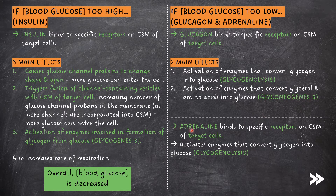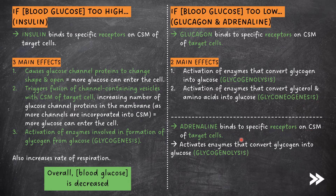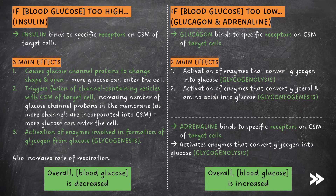Note that adrenaline also plays a role in increasing the blood glucose concentration when levels are too low. Adrenaline binds to specific receptors on the cell surface membrane of target cells, activating enzymes that carry out glycogenolysis. Overall, the blood glucose concentration is increased back to the normal level.